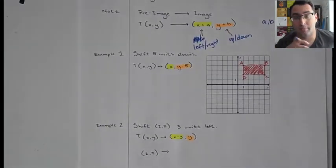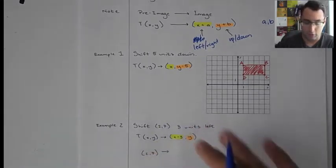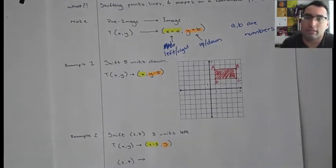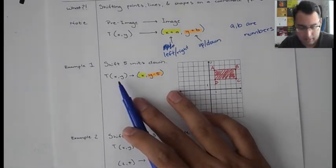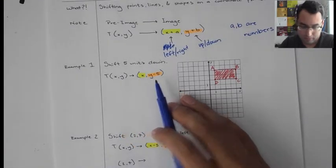Alright, so we're going to have four examples, some that require coordinates, some that just have a graph. So first one is we have a graph. This is saying shift five units down. So how that looks like on a mapping diagram is we see T(x,y) goes to (x, y-5).